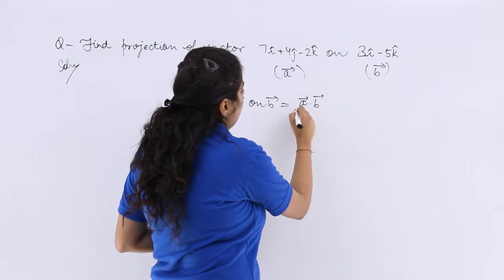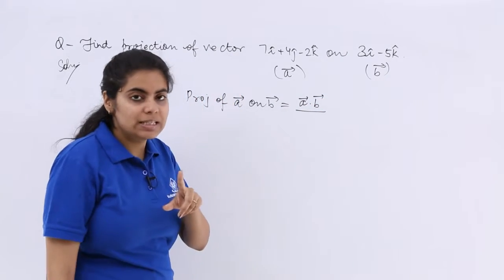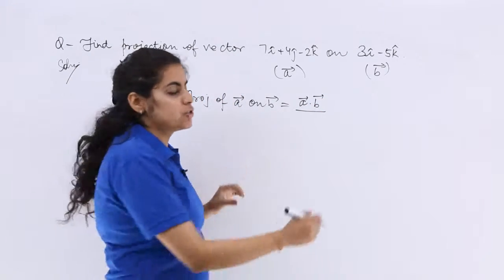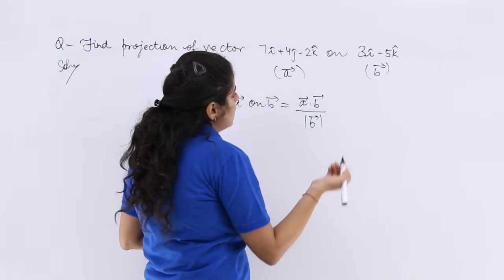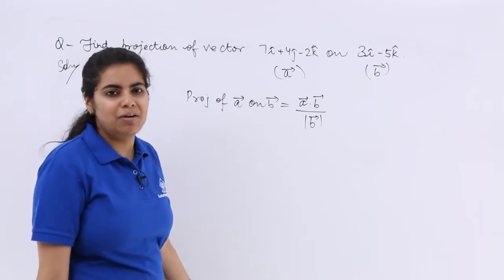It is a dot b whole upon which vector's magnitude after on. So after on is only b vector. So simply speaking that is what you have to do.